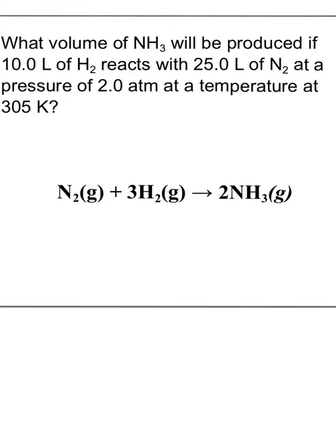Alright, here's a practice problem. What volume of NH3 will be produced if 10 liters of H2 reacts with 25 liters of N2 at a pressure of 2 atmospheres and a temperature of 305 Kelvin? So first step, balance the equation. I see large numbers in front, check, that's already balanced. Next, turn the given number, so 10 liters and 25 liters, into moles. So I need to use some mole islands.